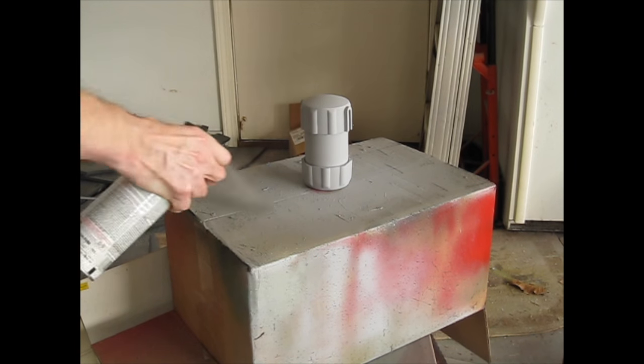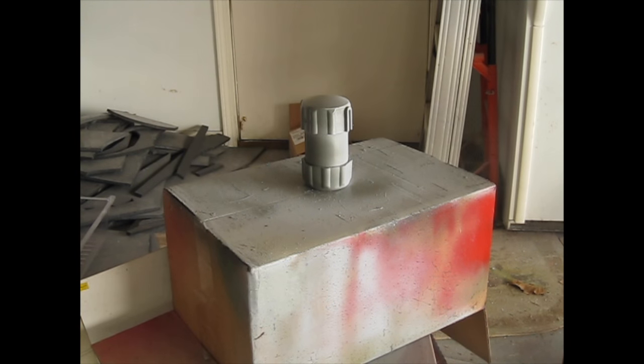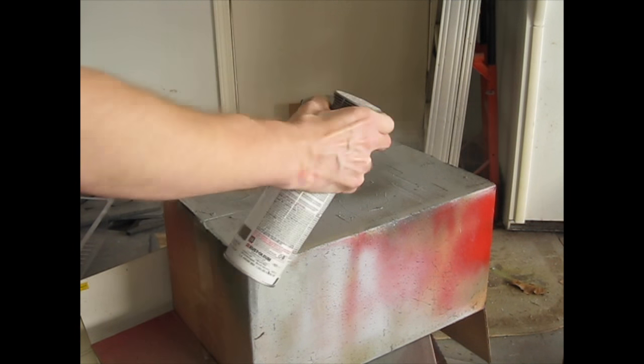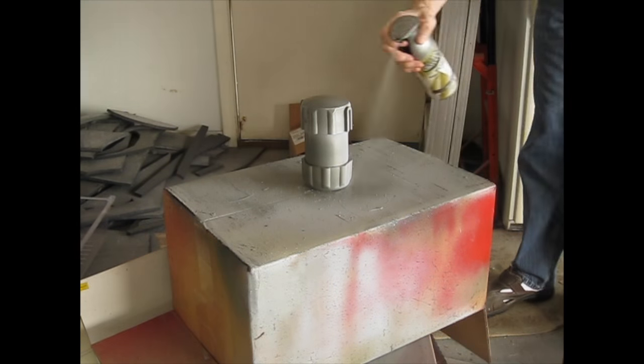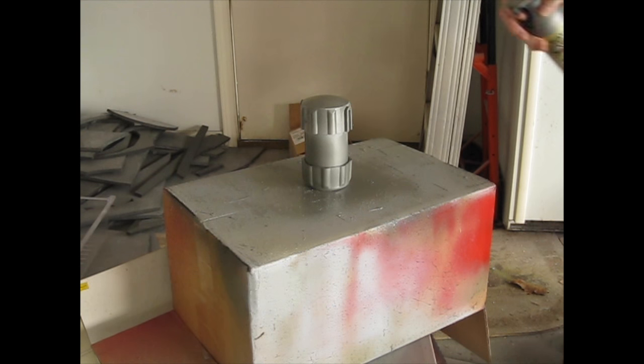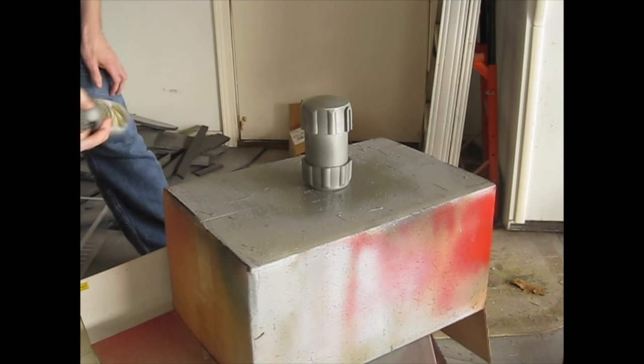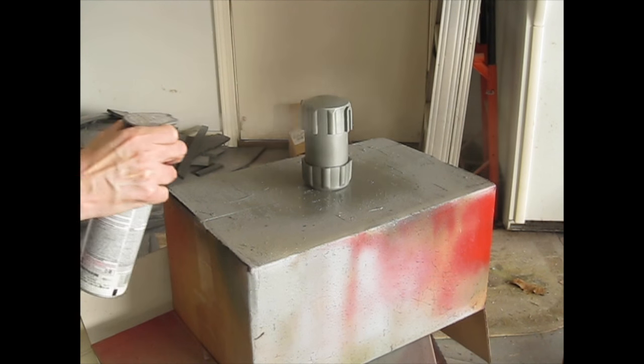Next is a Rust-Oleum Universal Advanced Formula metallic paint and primer in one. I'm kind of putting down two primers, but this will help give me the kind of metallic chipping that I'm going to do later on. Pretty much any metallic color will do.